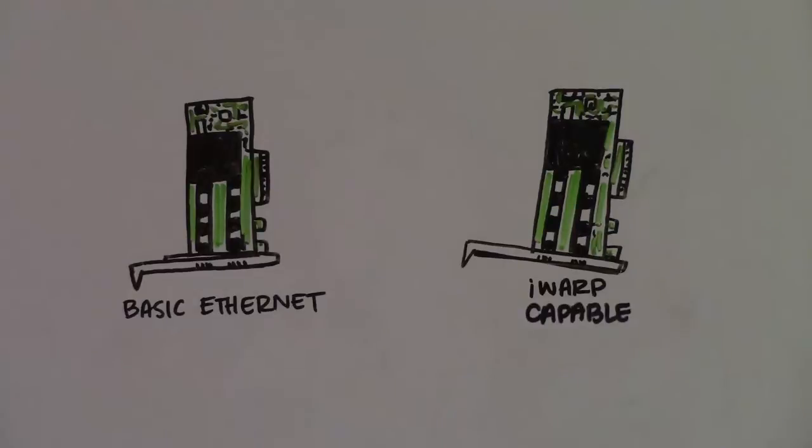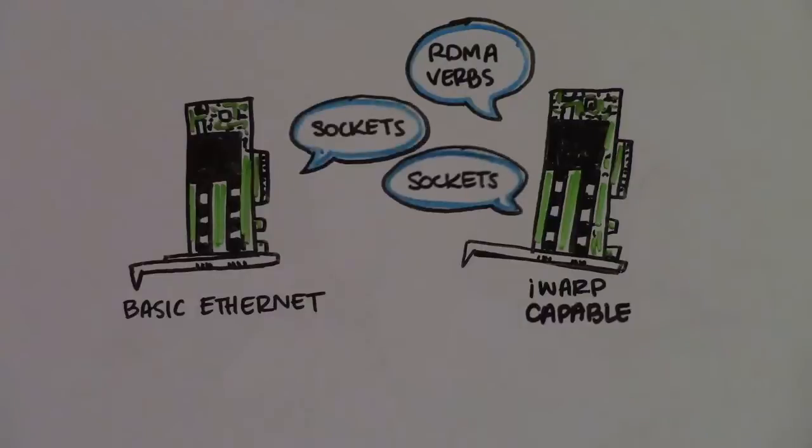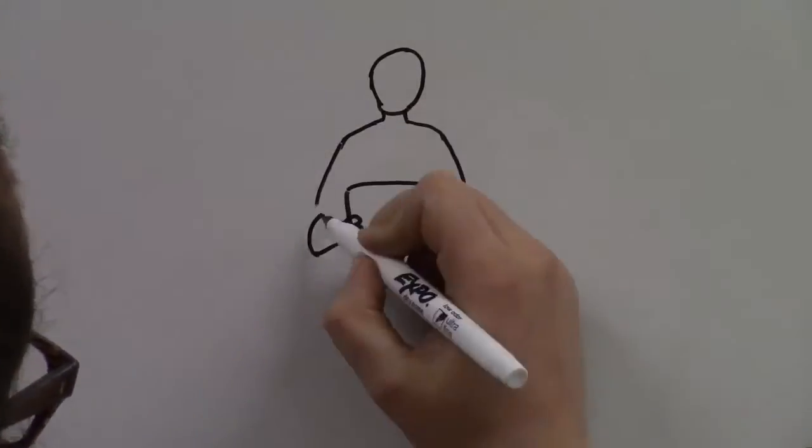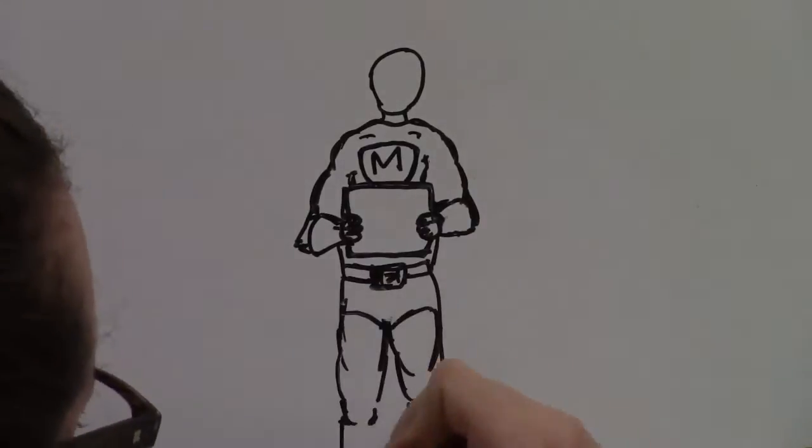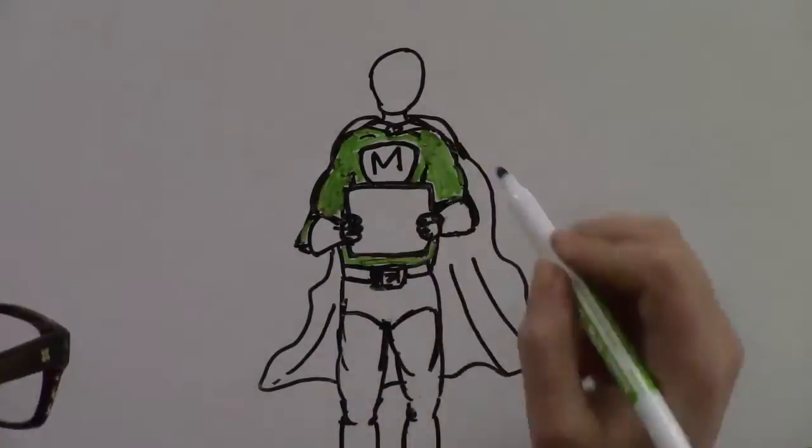The biggest challenge for taking advantage of iWARP is that it requires applications to be written to use RDMA verbs, rather than the standard Ethernet LAN interfaces known as sockets. That's where system software comes to the rescue, starting with Microsoft delivering SMB Direct technology in Windows Server 2012.